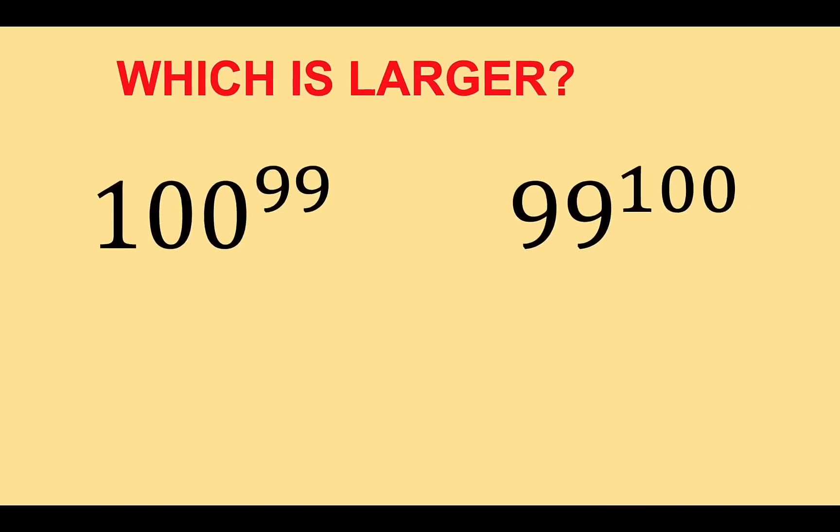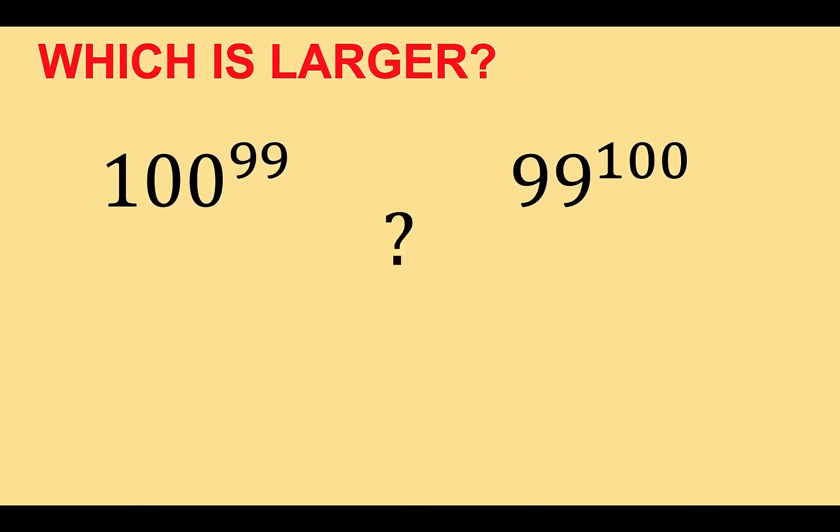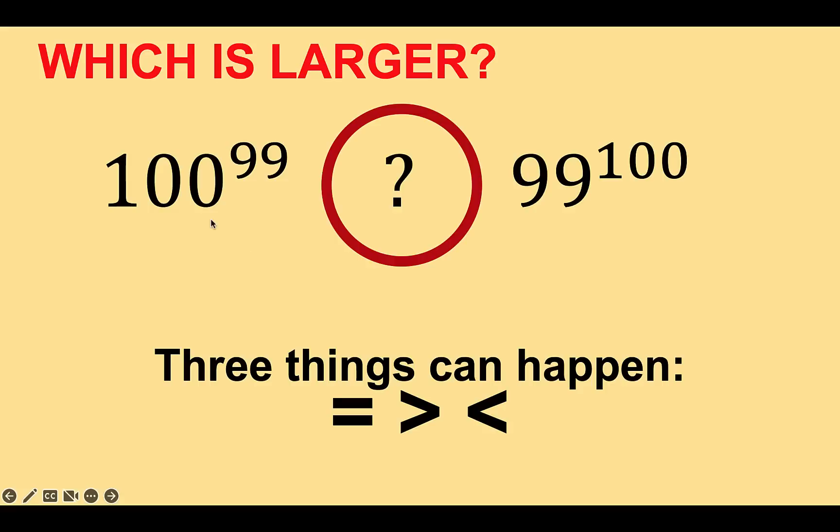Now let's solve this problem together. There are three things that can happen here. Either the left and the right side are equal or the left side is greater than the right side or the left side is less than the expression at the right side.